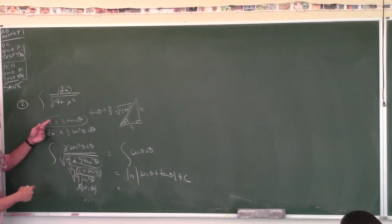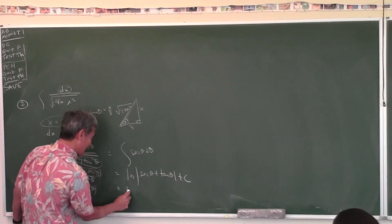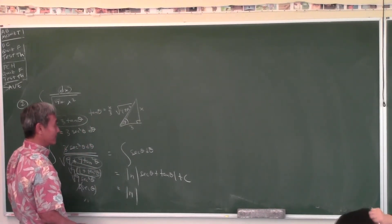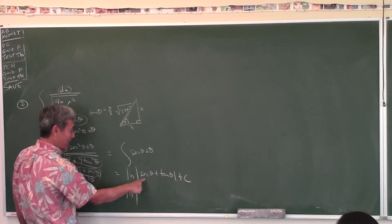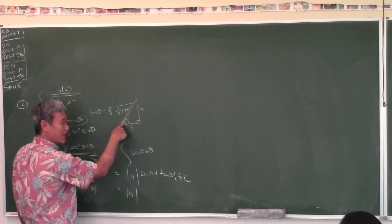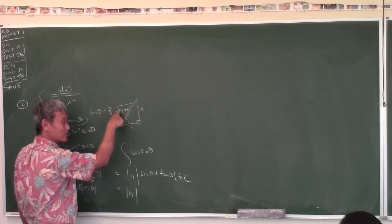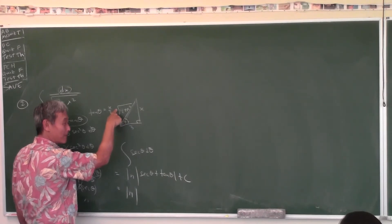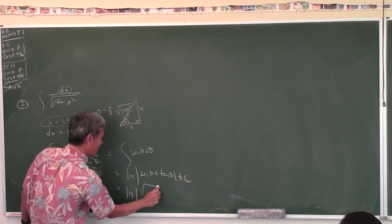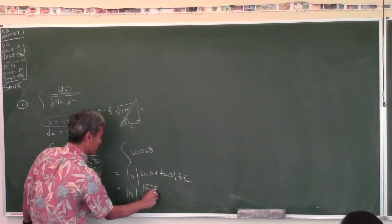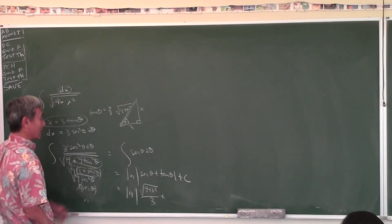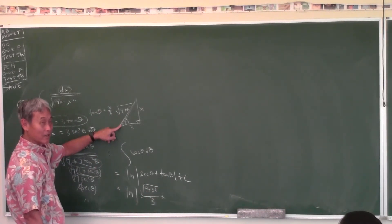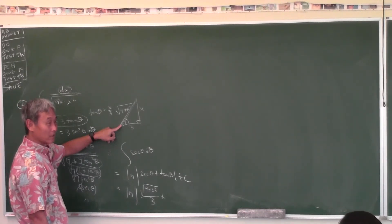If X equals 0: tan θ equals 0, so θ equals 0. If X equals 3: tan θ equals 1, so θ equals π/4. Those are the new limits: 0 to π/4.